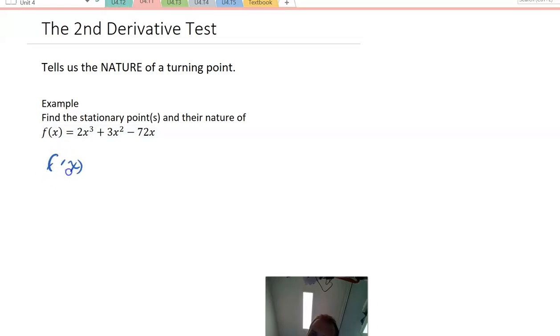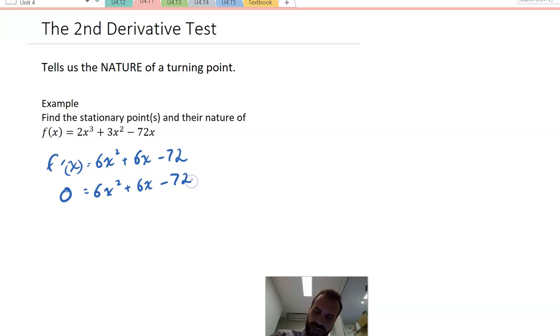So let's just jump straight into doing that. f'(x) equals 6x² plus 6x minus 72. All right, that's pretty good so far. Now we let the derivative equal zero. So zero equals 6x² plus 6x minus 72.